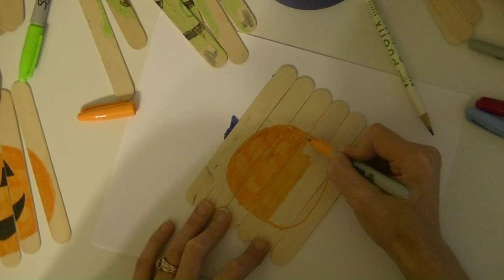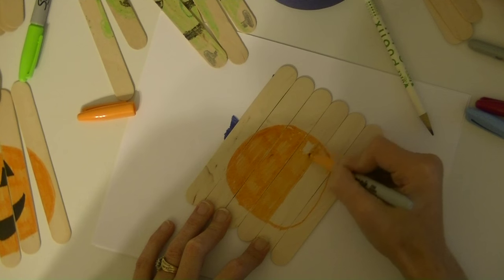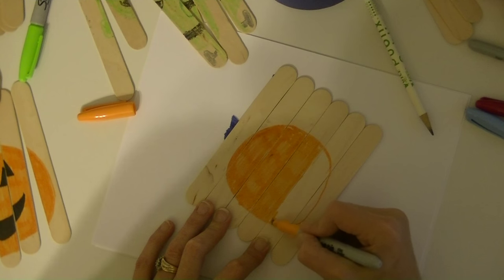And for the pumpkin is easy to draw. So we're going to go and do this one. And you can always do like sets of four. You can do a pumpkin, the Frankenstein, a ghost, maybe a witch.